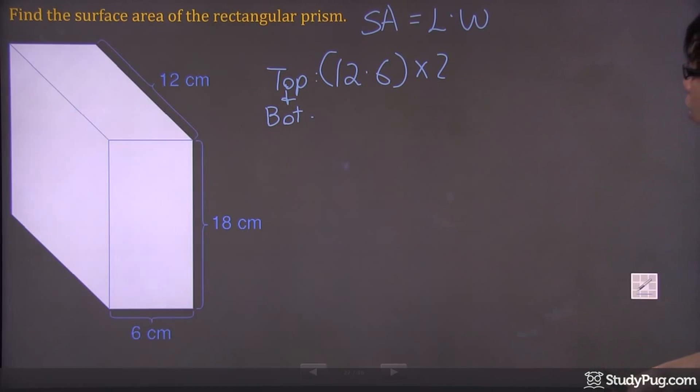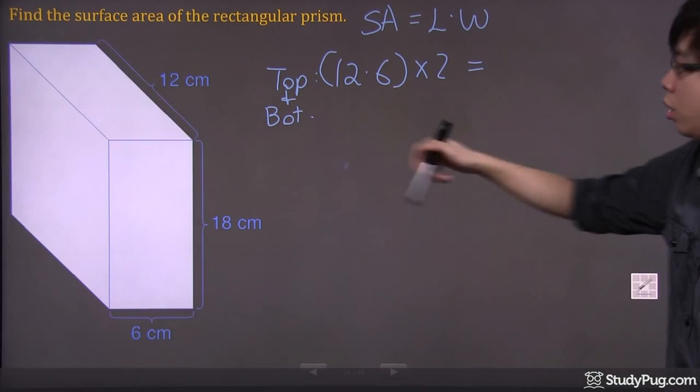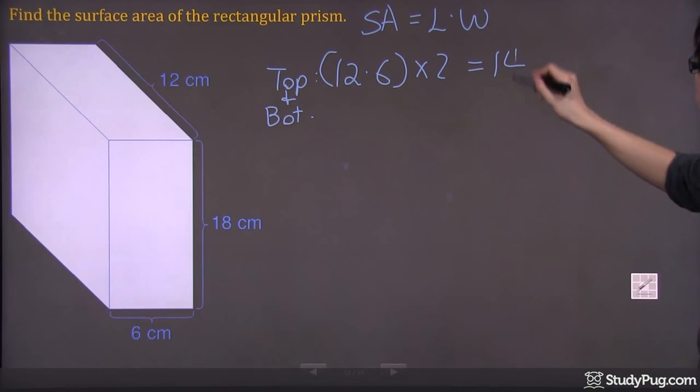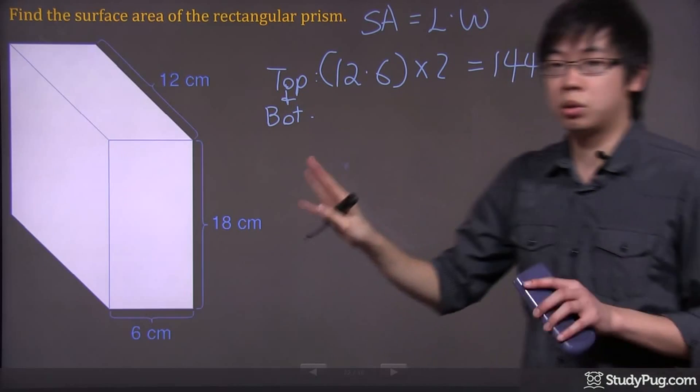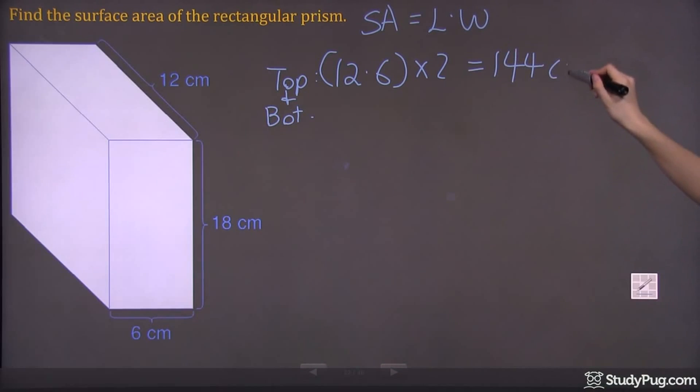So basically, all you have is 6 times 2, which is 12, and 12 times 12 is going to give you 144. So at least so far, we've got the top and the bottom covered. The area is going to be 144 centimeters squared.